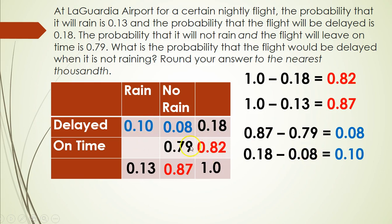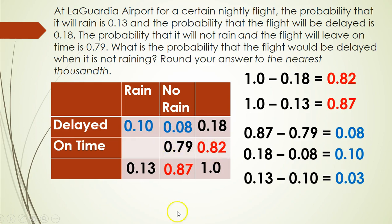For the last cell, I subtracted 0.10 from 0.13, which gave me 0.03. Either way I approach it, I get 0.03 for that cell. So now the table is fully filled in.